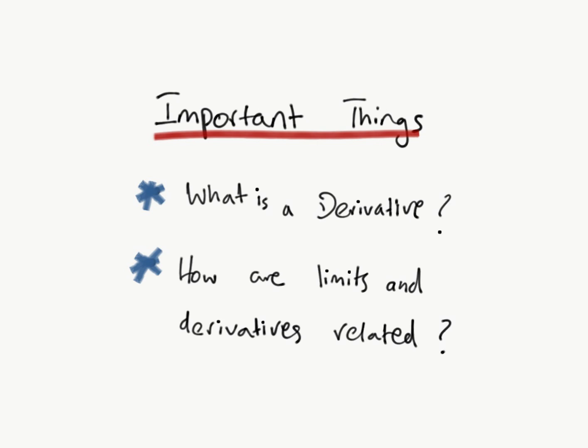So how are limits and derivatives related? Derivatives are special limits, and the derivative f prime can be found by finding the limit when h approaches 0 in the difference quotient equation.